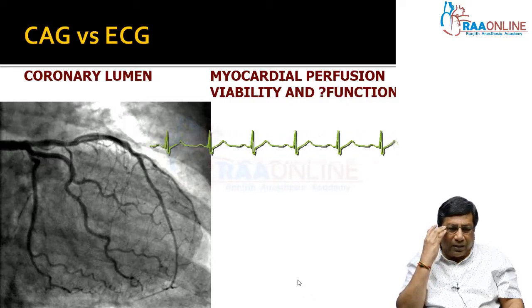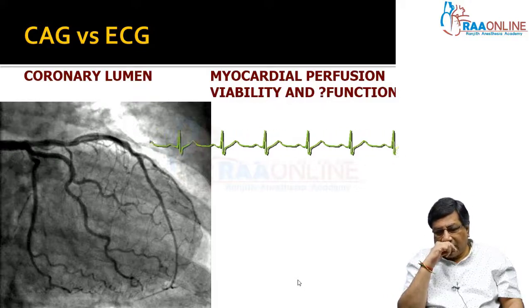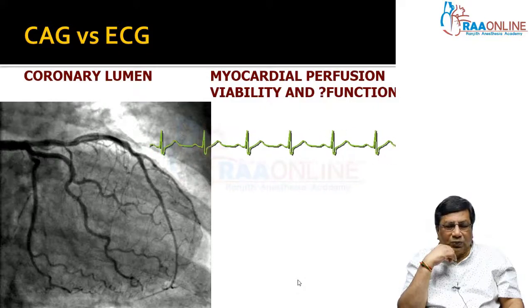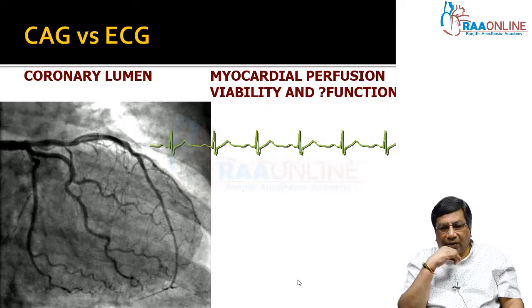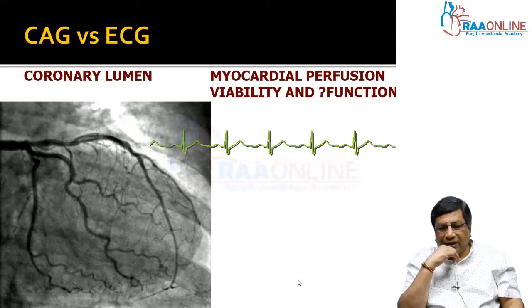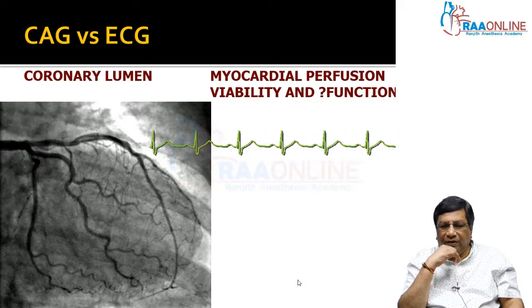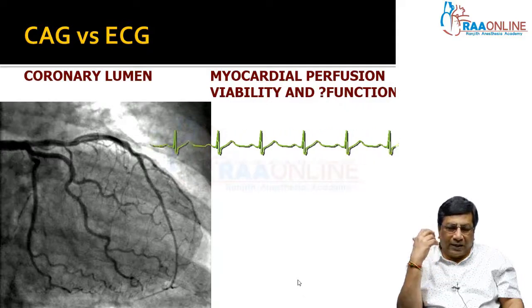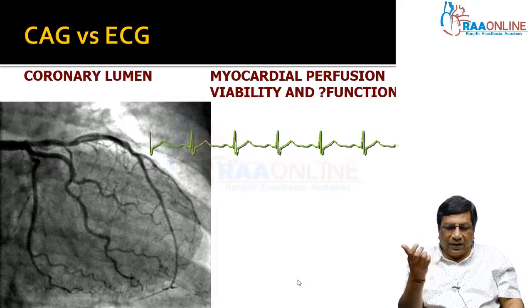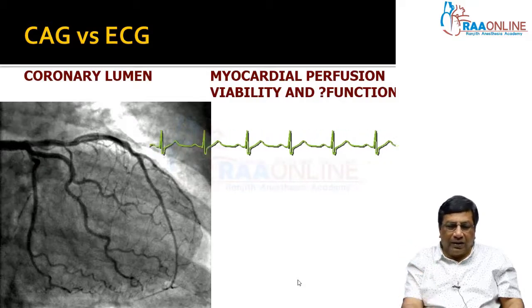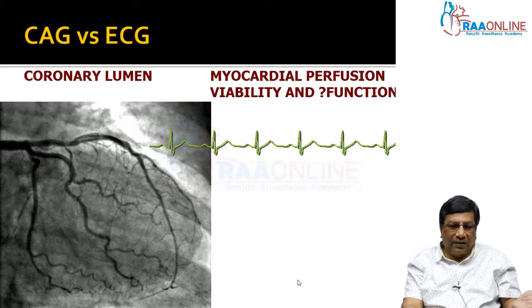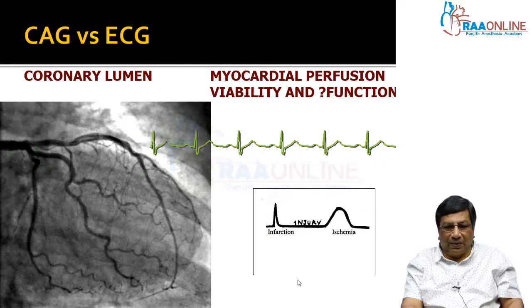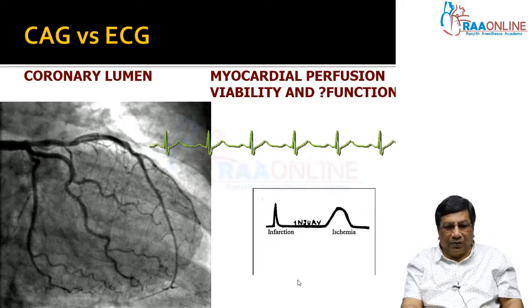The coronary angiogram is primarily done to decide whether to revascularize or not. But the ECG tells you even for that block in the coronary artery, it is worth revascularizing or not, because if the myocardium is not viable, there is no point in revascularizing. It also tells you whether revascularizing will give benefit. And even in the absence of big epicardial coronary artery disease, the patient can still have ischemia because of small vessel involvement, which you have to treat. That is the importance of the ECG over and above coronary angiogram.